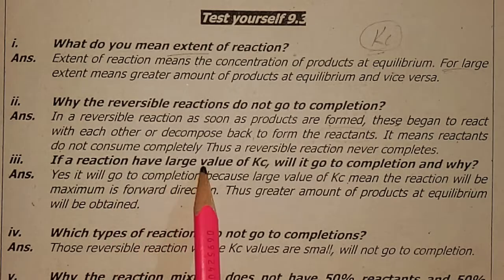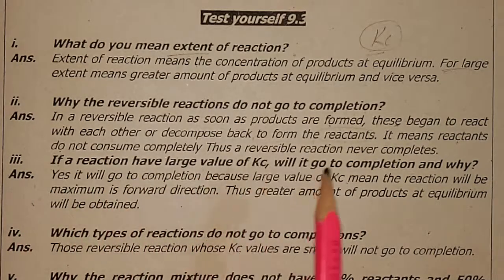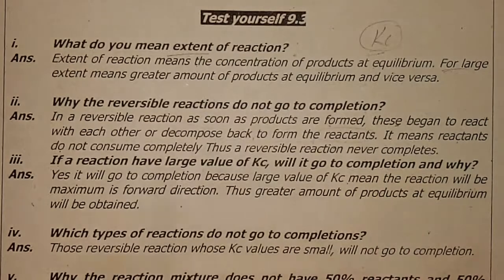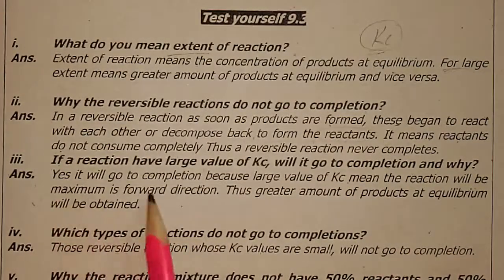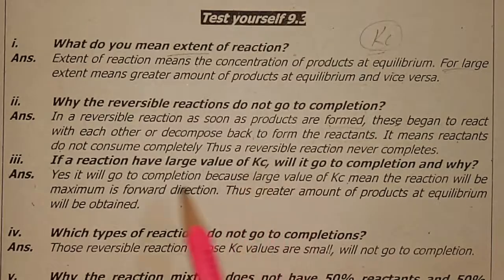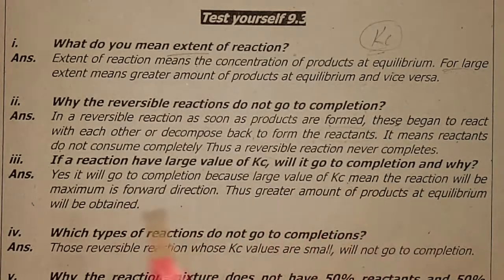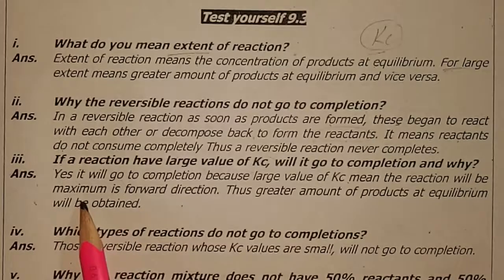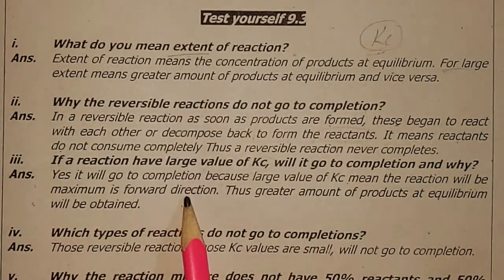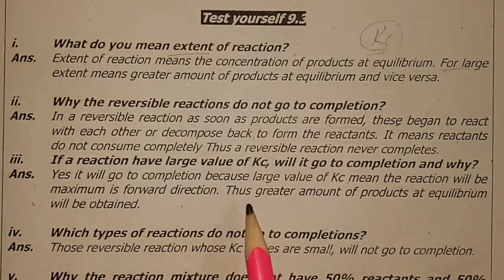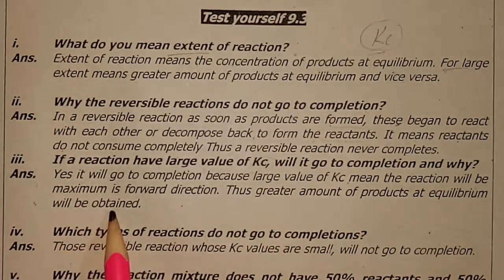If a reaction has a large value of Kc, will it go to completion and why? Yes, it will go to completion. If the Kc value is very large, then it will go to completion. Because a large value of Kc means the forward reaction will be maximum — it will go in the forward direction — and a greater amount of products at equilibrium will be obtained.